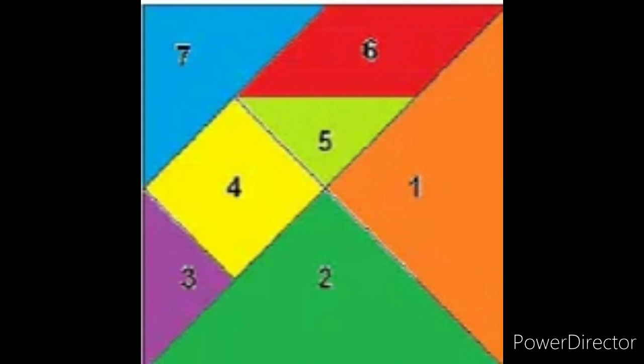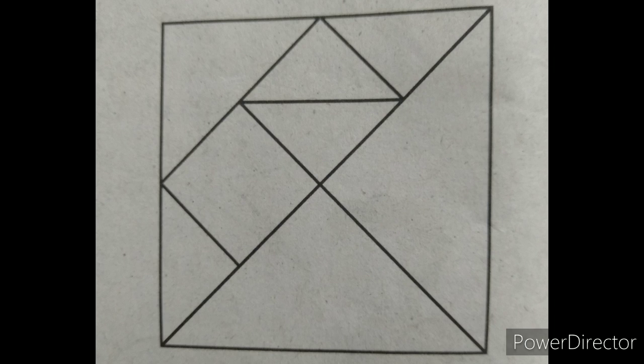Now let's start with triangles. How many pieces are made: 7 triangles and a square. The teacher made two pictures using the 7 triangles and a square. And we saw the tangram game on the computer.